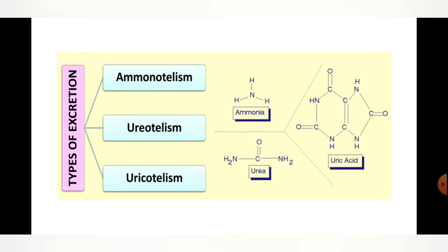Before starting the topic, let me give you a small introduction. In this chapter we have studied about the types of excretion based on excretory products. There are three types: ammonotelism, ureotelism, and uricotelism. Ammonotelism is where ammonia is excreted, ureotelism is where urea is excreted, and uricotelism is where uric acid is excreted.